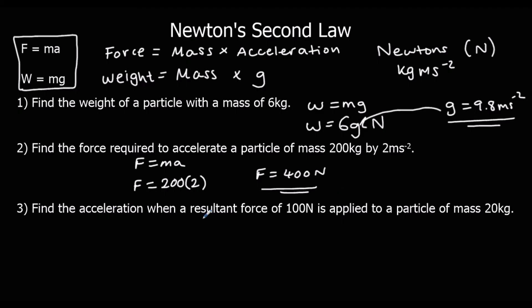Find the acceleration when a resultant force of 100 newtons is applied to a particle of mass 20 kilograms. F equals MA. We've got a resultant force of 100 newtons, and that equals 20 times A. Divide both sides by 20, so A is 5 meters per second squared.